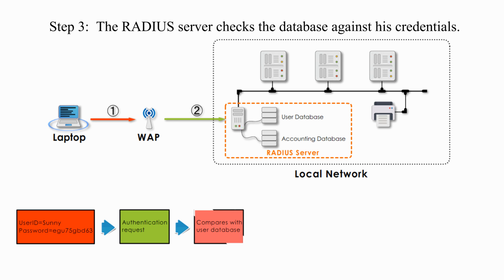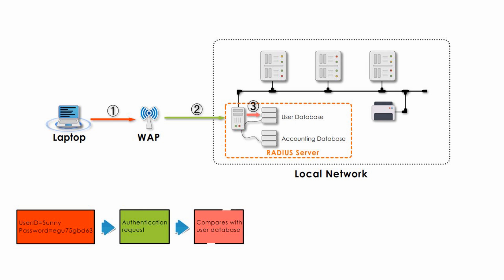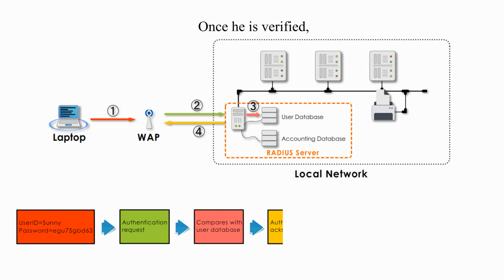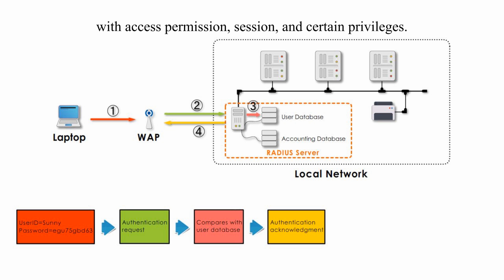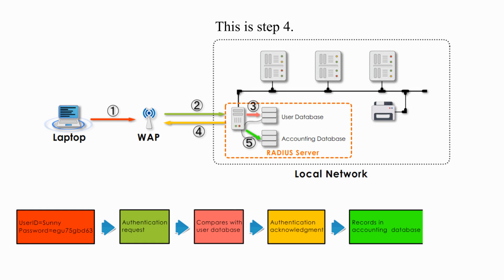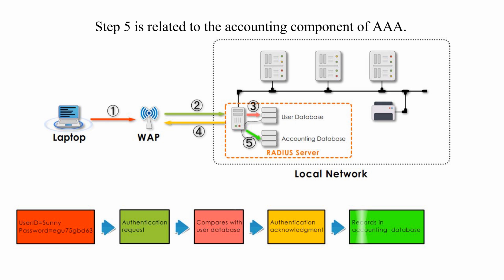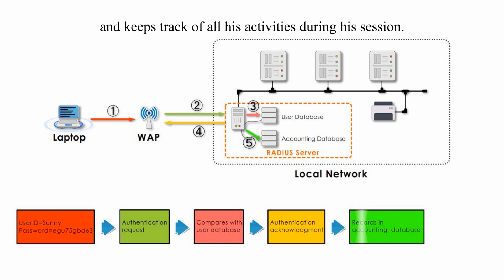Step 3: The RADIUS server checks the database against his credentials. Once he is verified, the RADIUS server sends a packet back to the WAP with access permission, session, and certain privileges. This is Step 4. Step 5 is related to the accounting component of AAA — the accounting database creates a record for the user and keeps track of all his activities during his session.